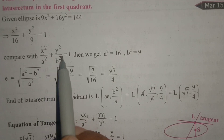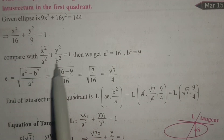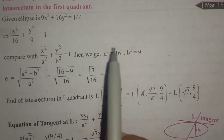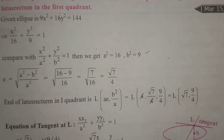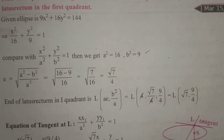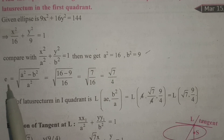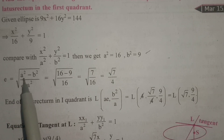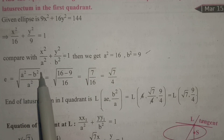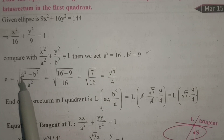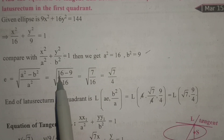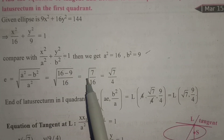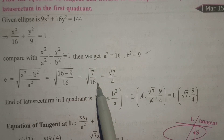Comparing with the standard ellipse equation x²/a² plus y²/b² equals 1, we get a² equals 16 and b² equals 9. Next, find the eccentricity. For an ellipse, eccentricity e equals the square root of (a² minus b²) divided by a², which equals √((16 minus 9)/16) equals √(7/16).